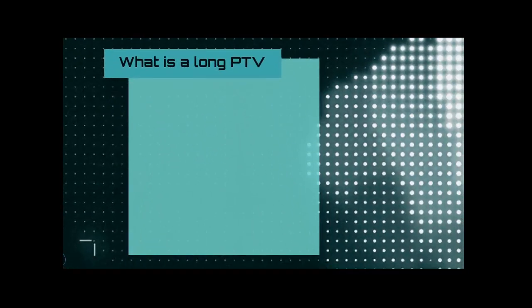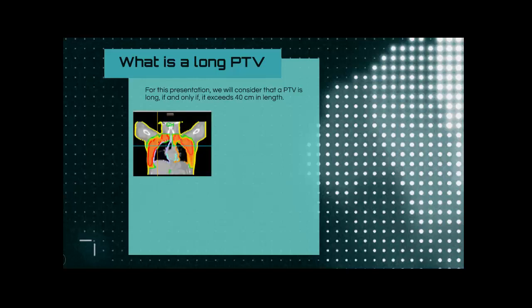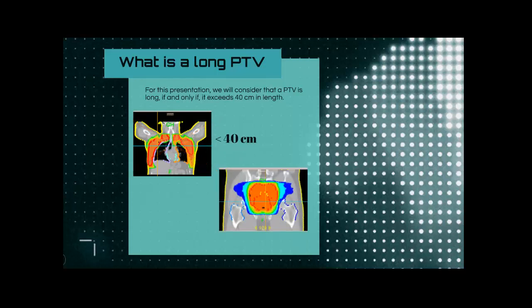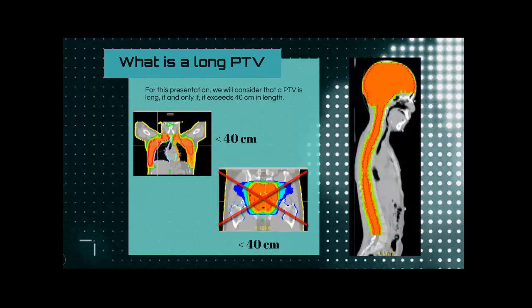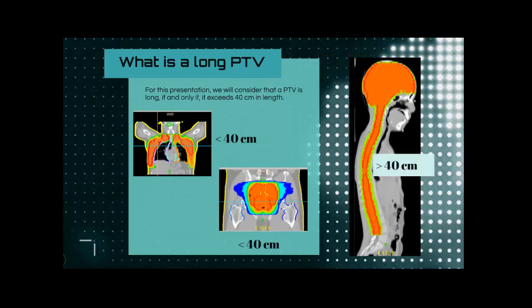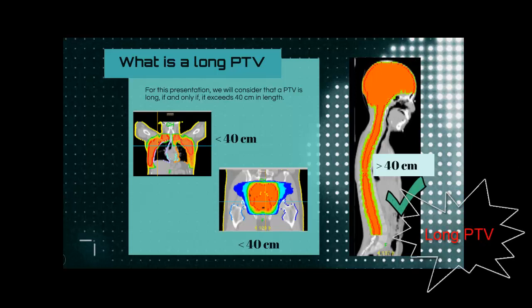What is a long PTB? For this presentation, we'll consider that a PTB is long if and only if it exceeds 40 cm in length. For example, have in mind a breast cancer — the measurements generally do not exceed 40 cm, so this wouldn't be a long PTB. Now have in mind a cervical cancer — this would neither be above 40 cm in volume. However, let's have in mind a patient who will be treated with neuraxis skull, such as a medulloblastoma. With cases like these, the PTB normally is above 40 cm long, which would be considered as a long PTB.